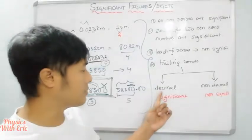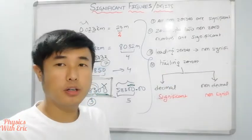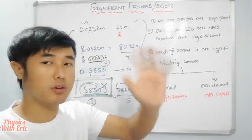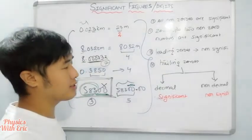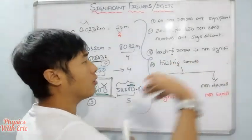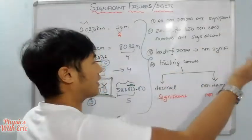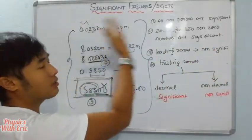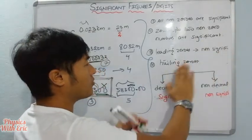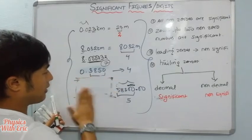In a decimal number, leading zeros are non-significant. I'm talking about zeros — leading zeros are non-significant. For example, in a number like 0.005, the leading zeros do not count.